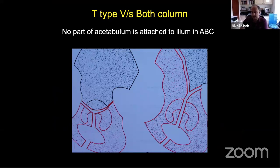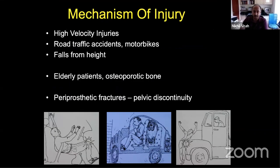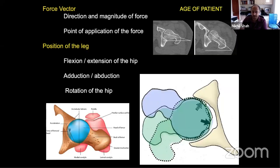In an ABC, the acetabulum is completely detached from the ilium. These are high energy injuries from road traffic accidents, motorcycle accidents, and falls from height. Nowadays in elderly patients, these injuries are very common in osteoporotic bone with low energy mechanisms — just a fall from standing height can cause a very comminuted ABC-type fracture. We are also seeing some periprosthetic fractures. In terms of mechanism, acetabular fractures depend on the force vector applied and the position of the leg.